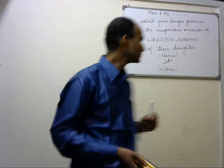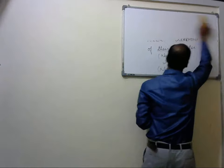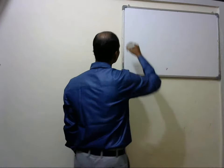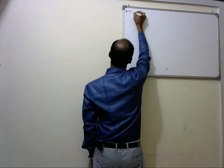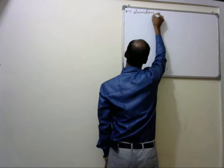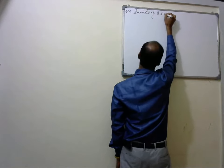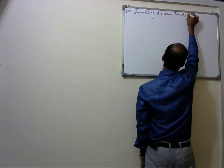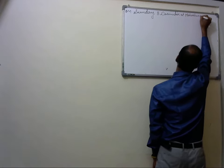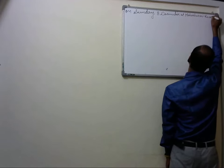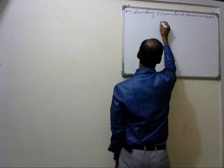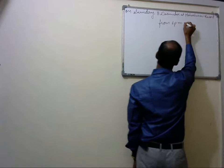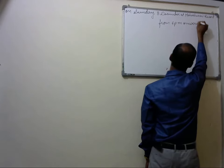You must write about the time and date. So when you have all this description, you can write: on Sunday, 8th, at Maheshwari Resort, and now the time — from 6 PM onwards.